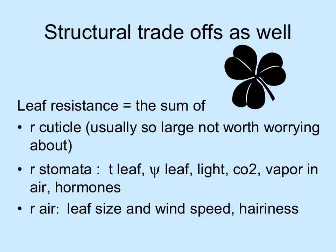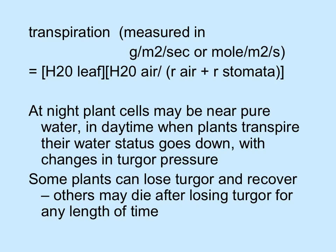The resistance of the air is affected by the size of the leaf and also its external texture — if it's hairy, that can affect the boundary layer of the leaf and how quickly wind passes over it. Transpiration equals water potential in the leaf minus water potential in the air, divided by the sum of the resistance of the air and the resistance of the stomata. This is usually measured in grams per square meter per second or moles per square meter per second.